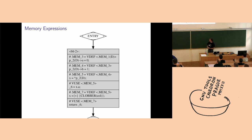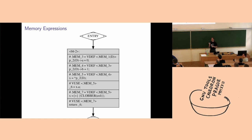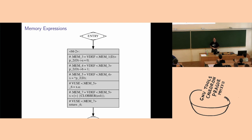How does value numbering work with memory? The simplest approach is to factor in the current memory state along with the expression — so instead of just x.a, you hash x.a at .mem5 and check if you have another x.a at .mem5. That's very simplistic and doesn't get you very far, but probably helps in some cases.